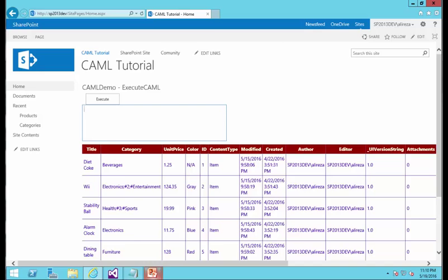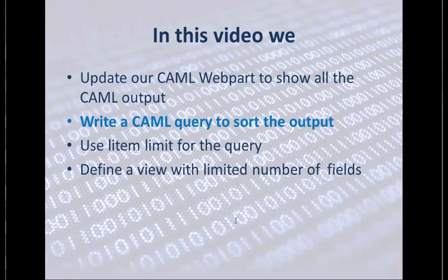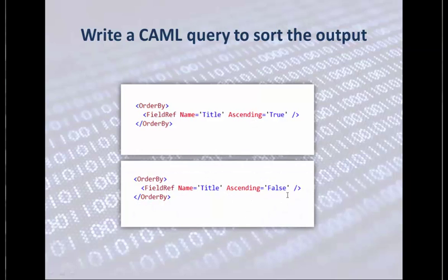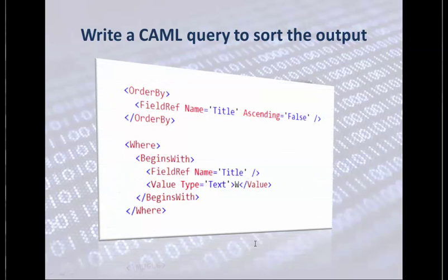Now let's write a CAML query to sort the output. This query currently returns everything in the actual order of the list. We want to sort it, for example, by title. To sort the output, we put an OrderBy element and list the fields by FieldRef. If I want to sort by title, I put FieldRef Name equals Title and define whether I want ascending or descending. If I also have a Where condition to filter, the final query will have OrderBy followed by the Where condition.